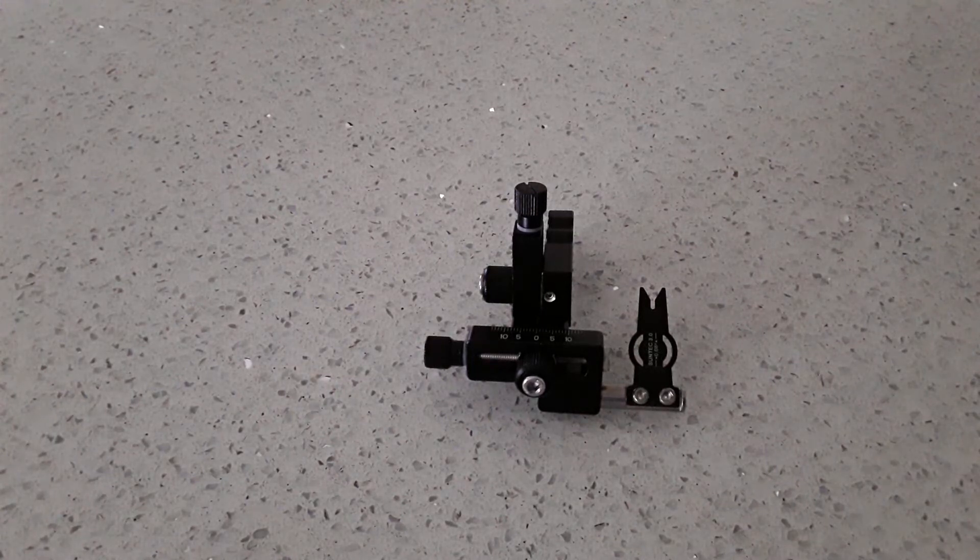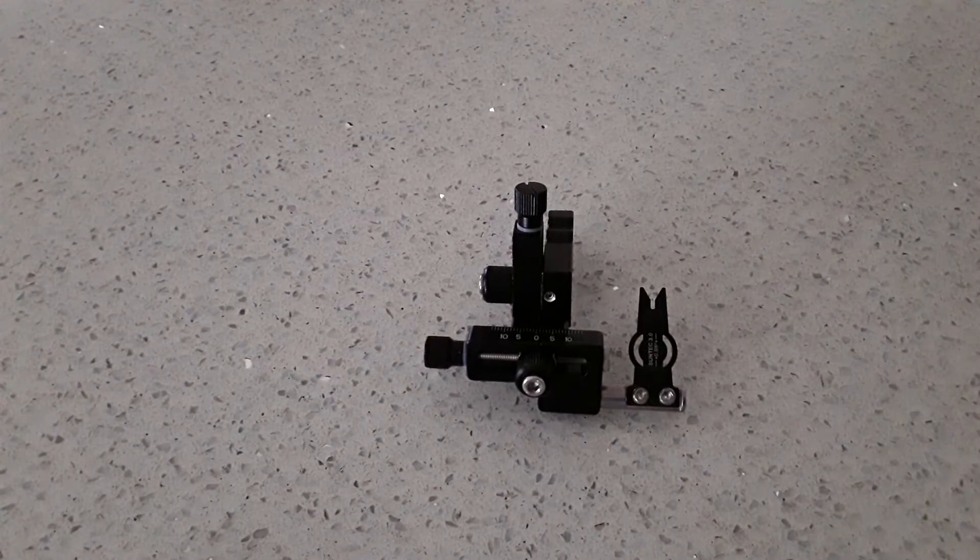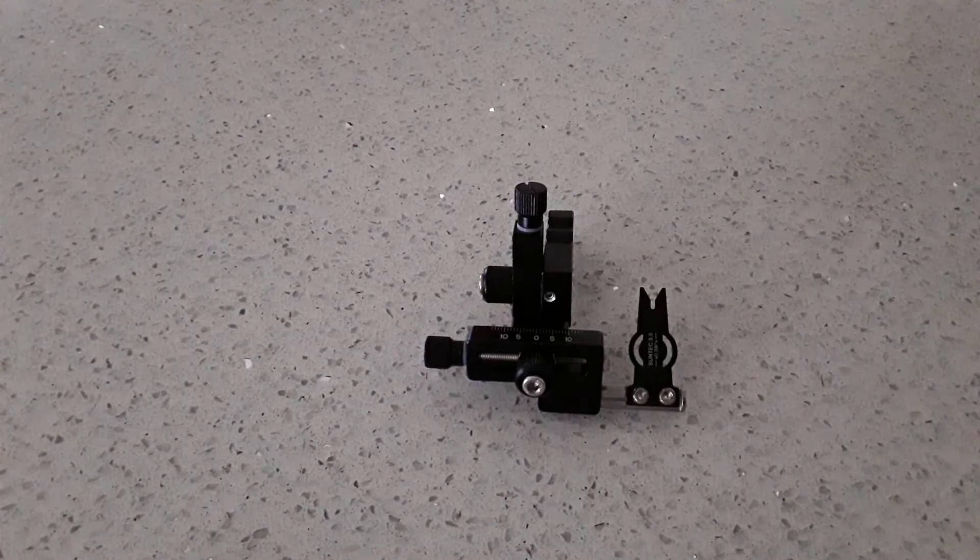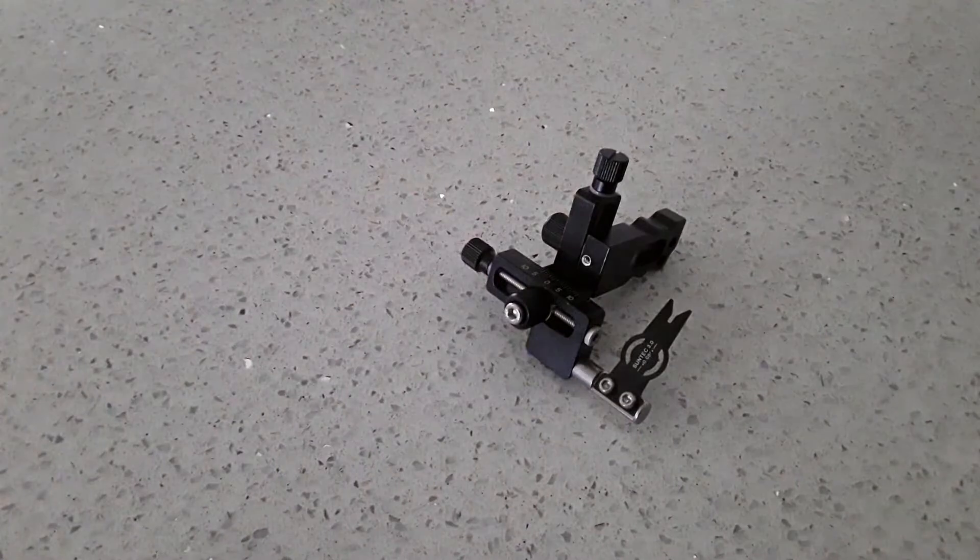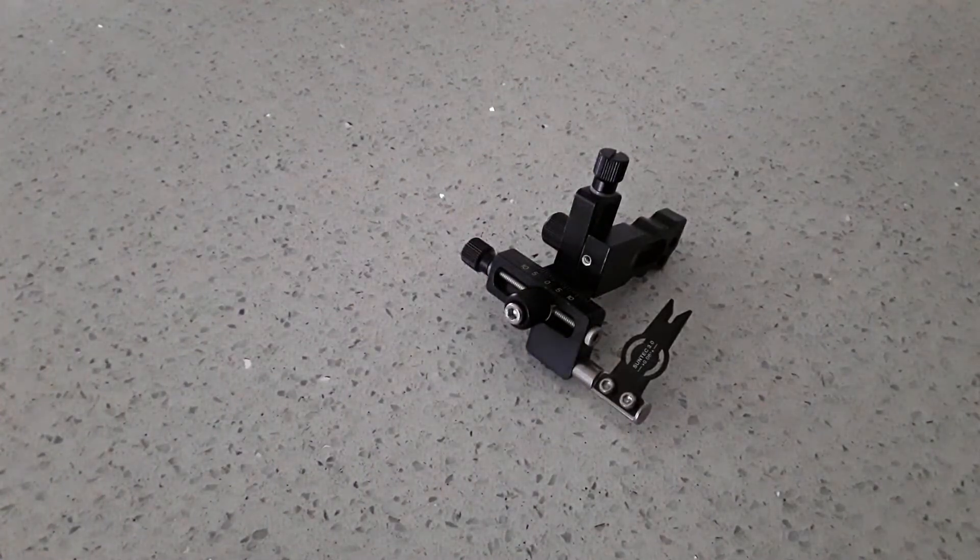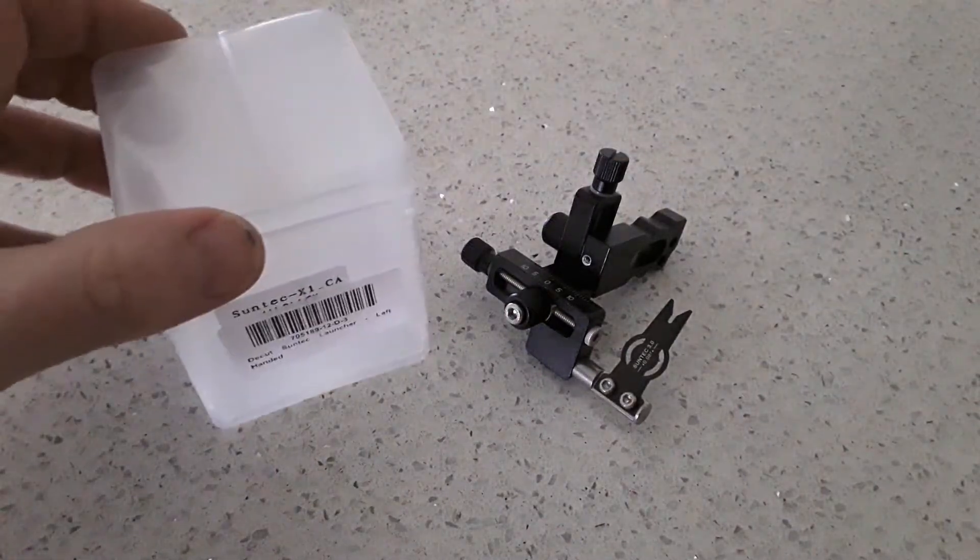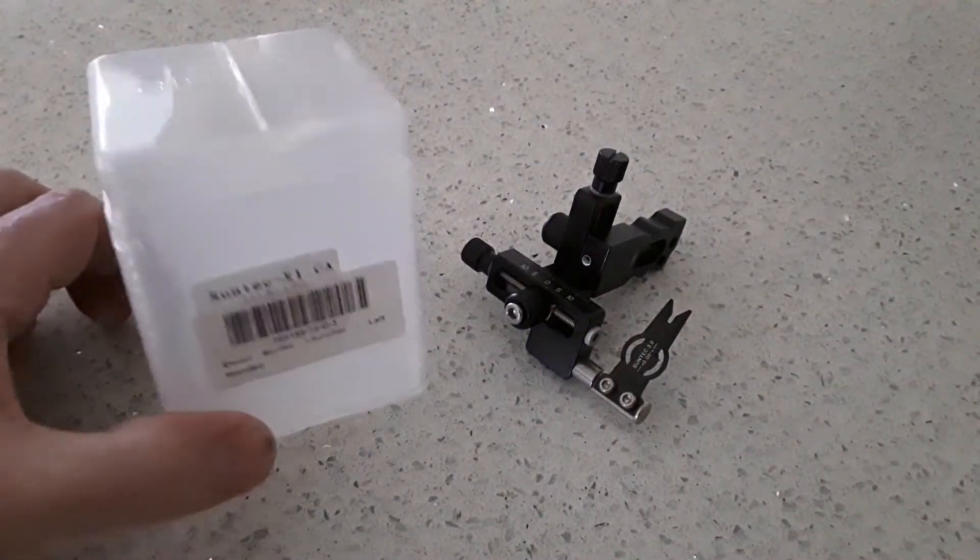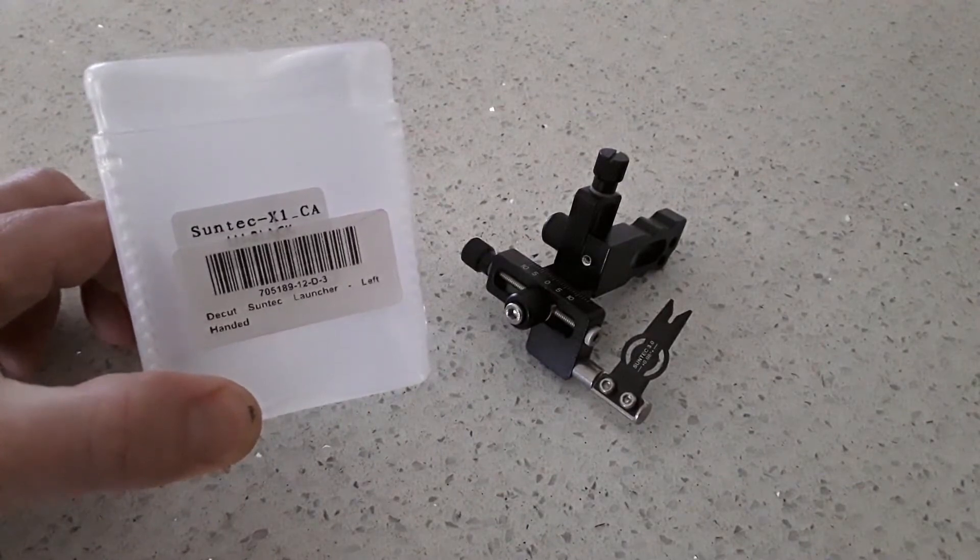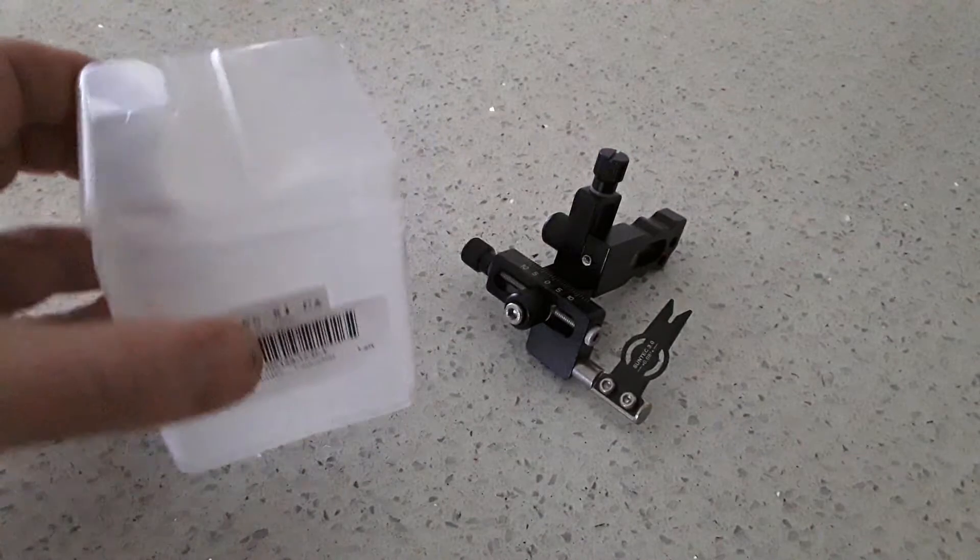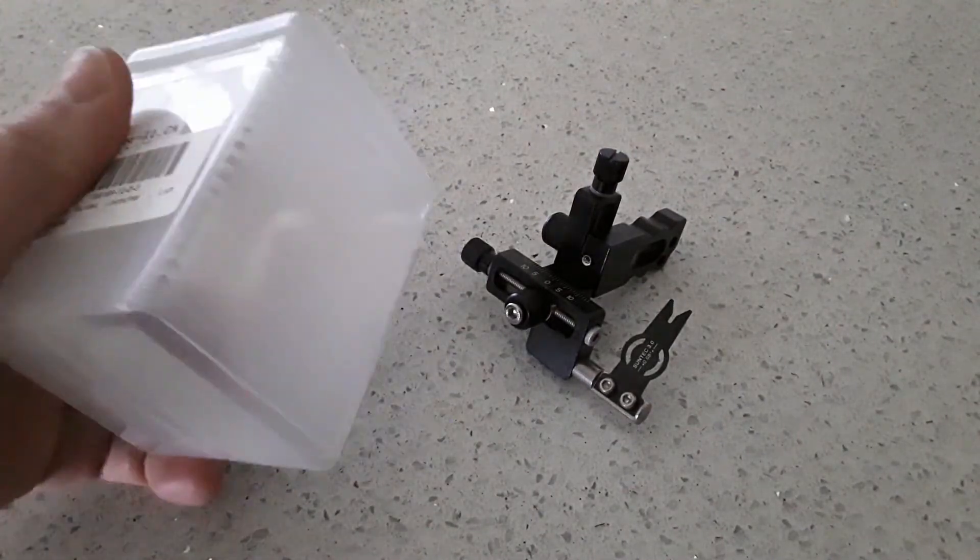Hi there, today we're going to look at the Decut Suntec X1 arrow launcher for compounds, and this is a left-handed version because I'm left-handed. Let's see what the packaging is like. It comes in a really hard box - Suntec launcher, pretty good box. Once it's on the compound bow you're not going to use the box again, but the box is pretty good for other things as well.